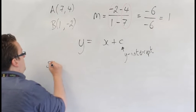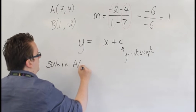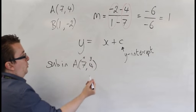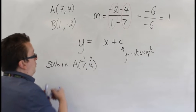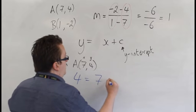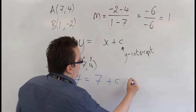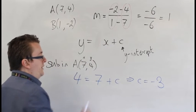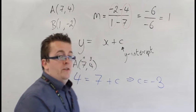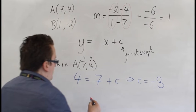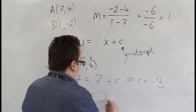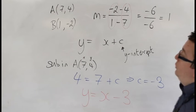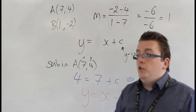So, if we sub in, let's say A, let's choose that one, so the x is 7 and the y is 4, so we have 4 is equal to 7 plus c. So, that would mean that c is equal to minus 3, 7 take away 3, you make 4. So, the equation of the line passing through A and B is actually y is equal to x take away 3. So, that's the equation that I'm looking for, so these are the steps that you would have to go through.